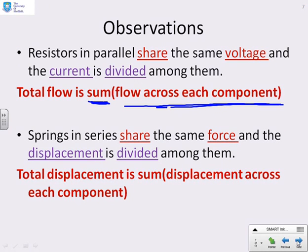If you have springs in series, then they share the same force, and the displacement is now divided among them. So you find the total displacement is the sum of the displacement across each component.